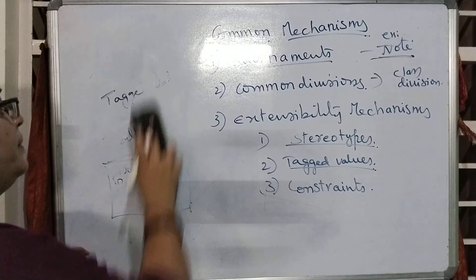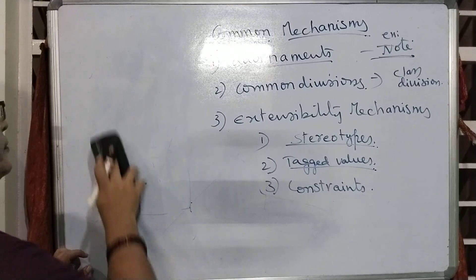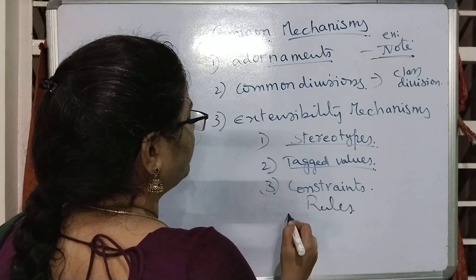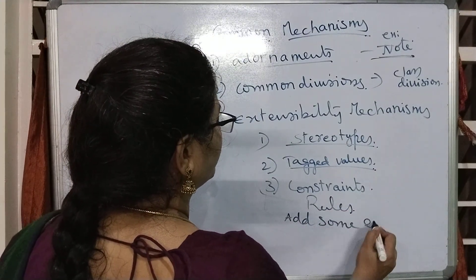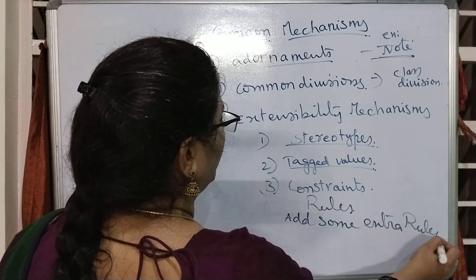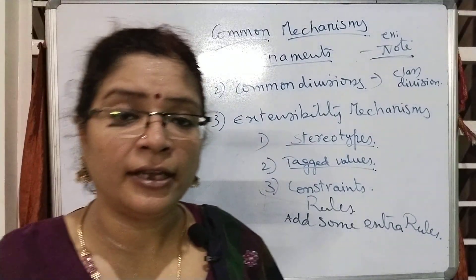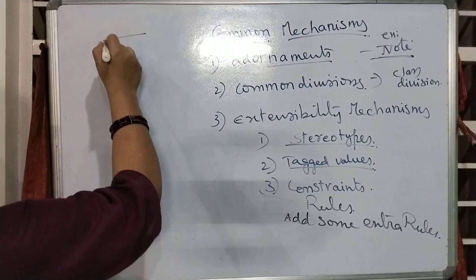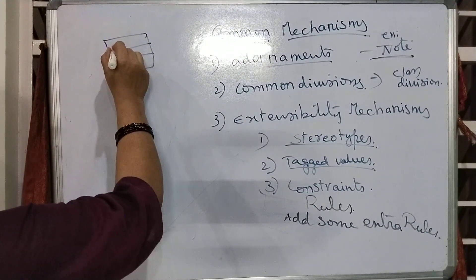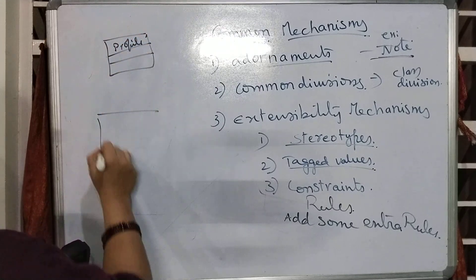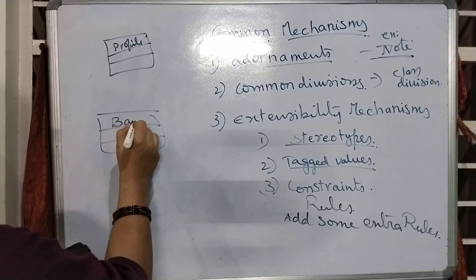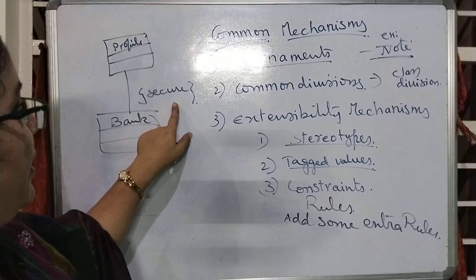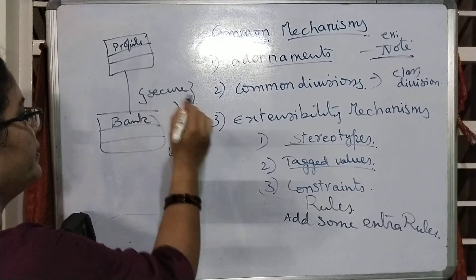Now we see what is the meaning of the constraint. Normally, constraints — as you all know — are rules, and they add some extra rules to the existing ones. These extra rules to be followed are treated as constraints. How can these constraints be represented? For example, we are having a class 'profile' linked with class 'bank,' and the association between profile and bank is always secure. You can represent the constraint like that.